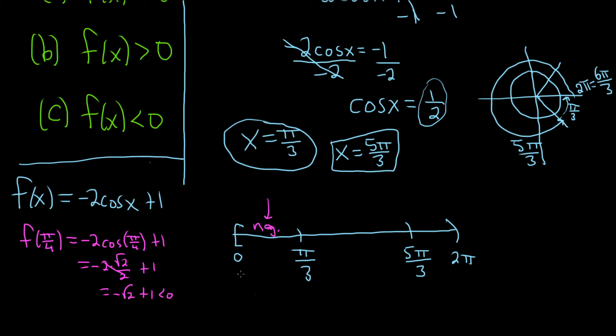How about a nice number between pi over 3 and 5 pi over 3? How about pi over 2? So, f of pi over 2. That would be negative 2 cosine pi over 2 plus 1. And, the cosine of pi over 2 is 0. So, this would be negative 2 times 0 plus 1. So, you just get 1. So, this would be positive.